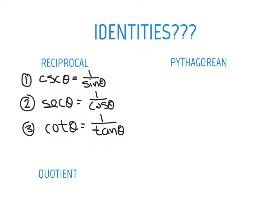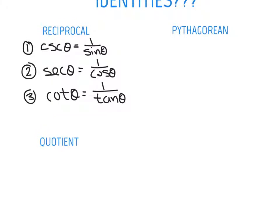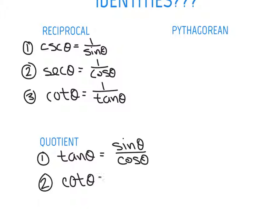For the quotient identity, there's two that we've got to know. The first one says that tangent of theta is equal to the sine of theta divided by cosine of theta. That's a handy one we'll use a lot this year as well as down the road in your future math classes. And then cotangent of theta could also be written as cosine of theta divided by sine of theta.